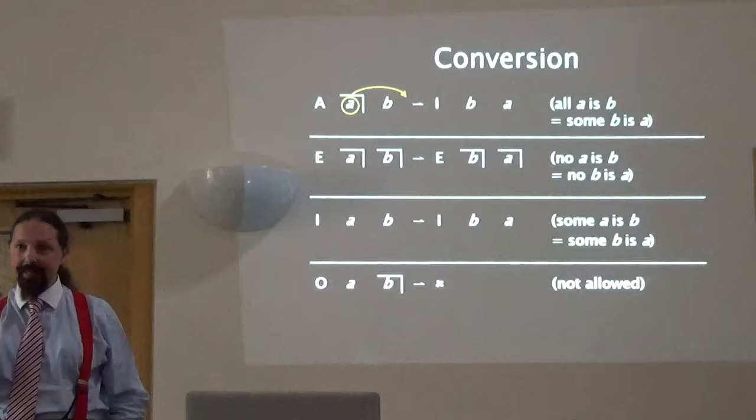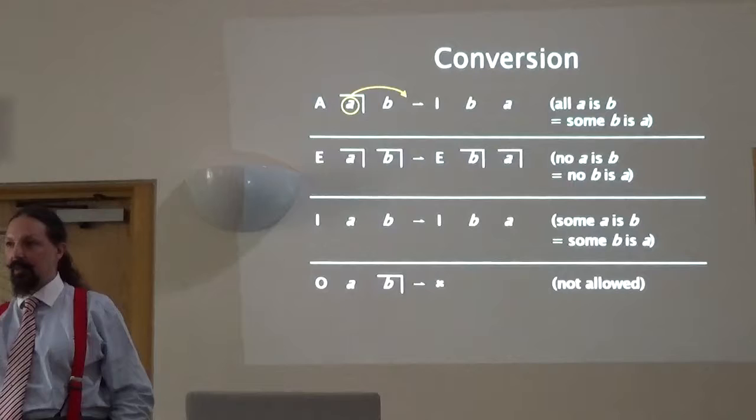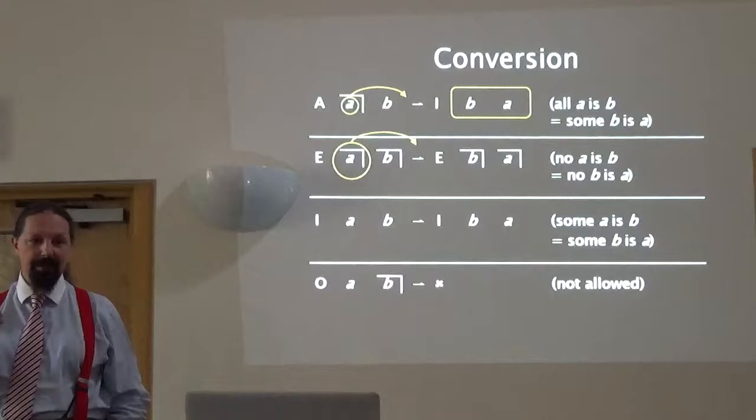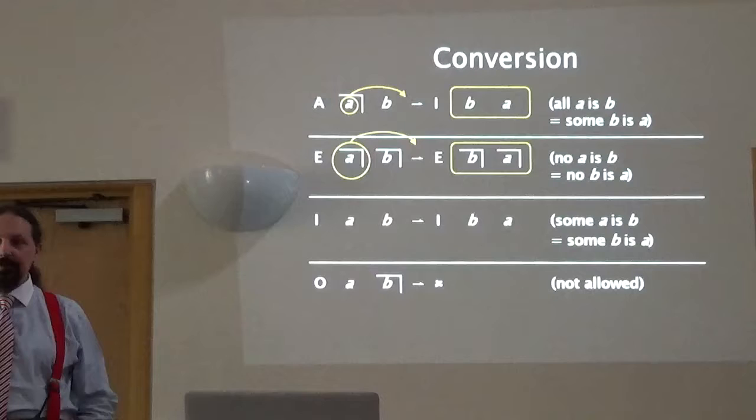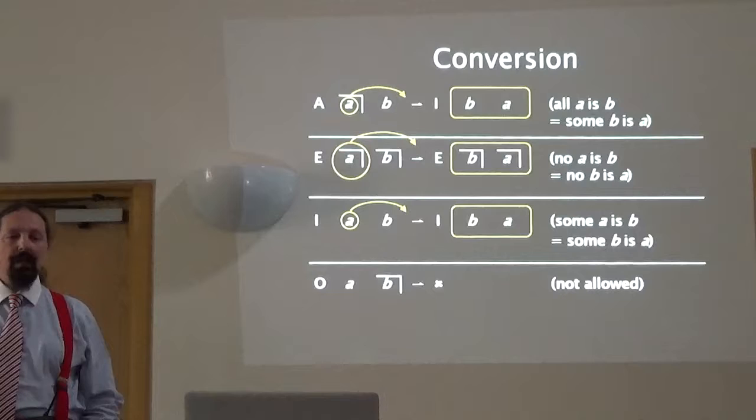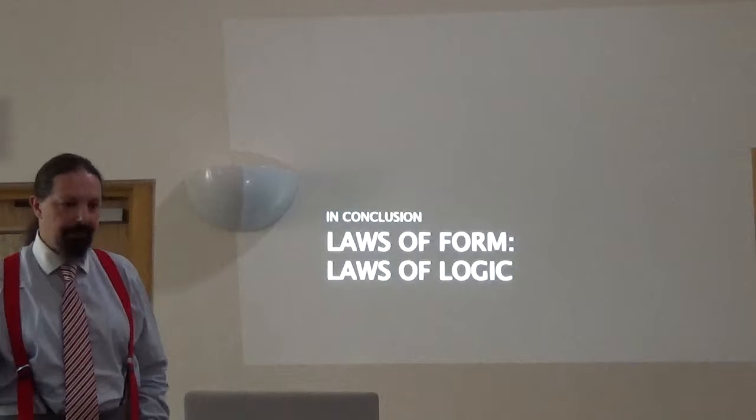Conversion becomes easy as well. Here you have to look at the predicate term B. If B is unmarked, then the A term crosses over in the same state as the predicate term. If the B term is marked, then the A term crosses over as marked. If you've got an I proposition, the B term will be unmarked and A crosses over as unmarked. O propositions don't convert — you just have to remember that.